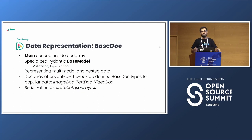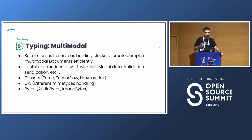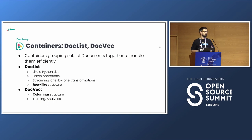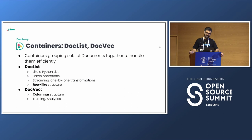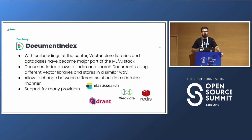There are predefined documents we have built for you to work easily with multimodal data. For typing, it's a set of classes and helpers to work with multiple data types. For containers, we have two sets: the DocList, which behaves like a Python list and is intended for inference workloads, and the DocVec, which is a columnar-oriented structure where tensors are grouped better together, making it more suited for training applications. Document index is where we get the integrations of all these vector databases.